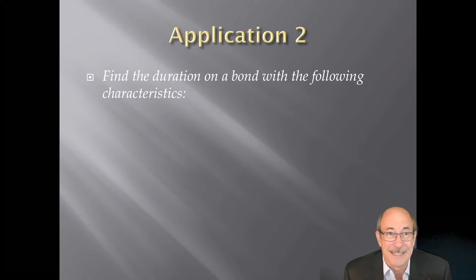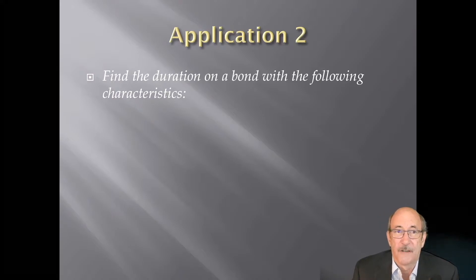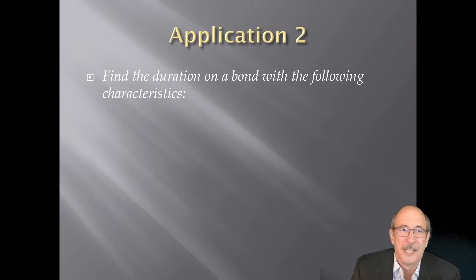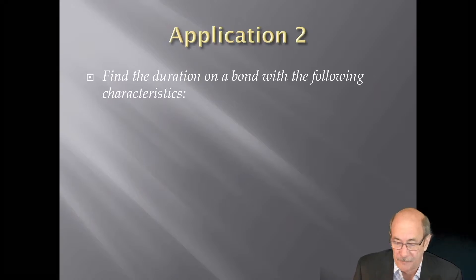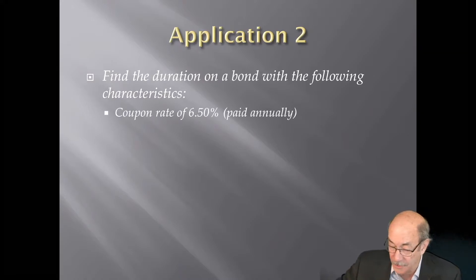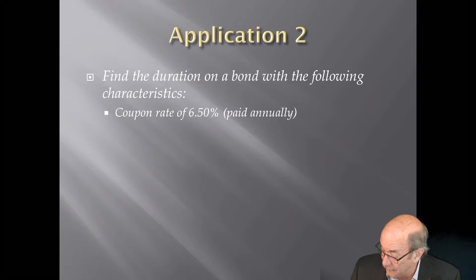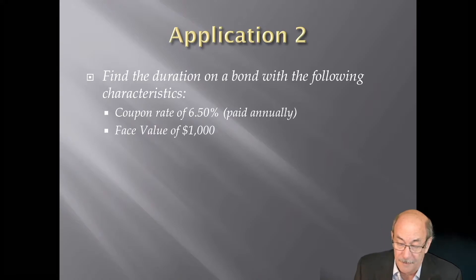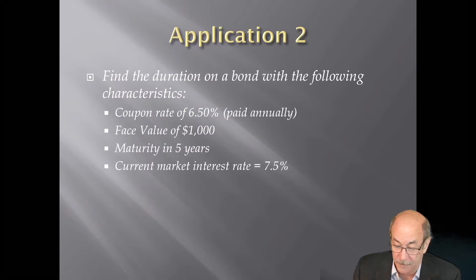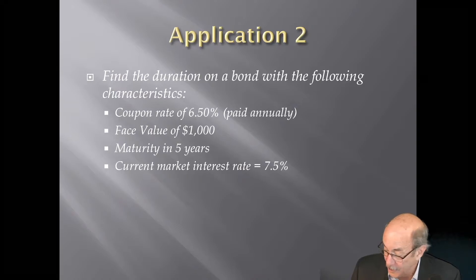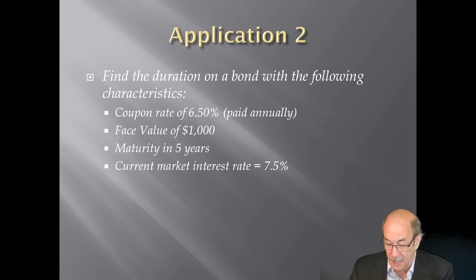You can do this one of two ways. On a test, the shortcut formula is probably fastest, but personally I'm not a fan of the shortcut because there's zero intuition in it — I like the summation version. Here's our bond: coupon rate of 6.5 percent, face value of $1,000, maturity in five years, and a yield to maturity of 7.5 percent. So five years and 7.5 percent is our market rate. The first thing we need to do is come up with the price of the bond.